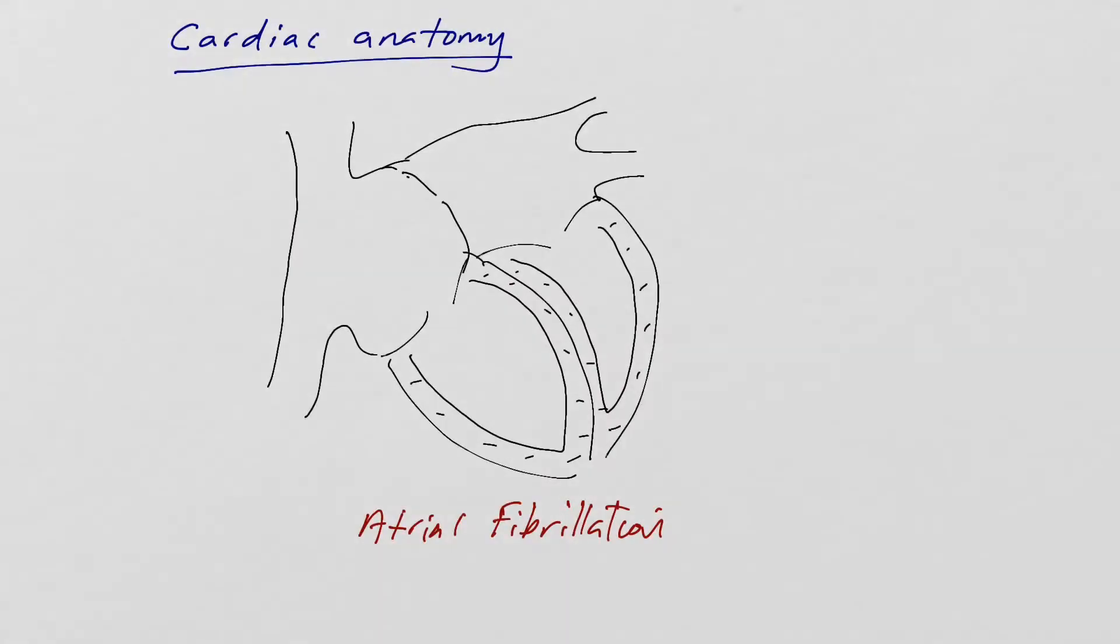In atrial fibrillation, the normal pacemaker doesn't work in the usual way. Instead, very abnormal areas of the heart, typically within the pulmonary veins, start to fire off with multiple repeated rapid activity. These are called ectopic beats.